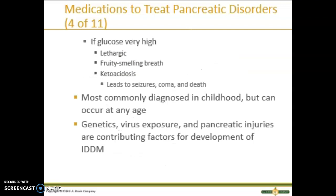If glucose levels remain too high, damage to the eyes, kidneys, heart, and nerves occurs, eventually leading to kidney failure, blindness, heart failure, and death. Signs of very high glucose include lethargy, fruity-smelling breath, and ketoacidosis — the insufficient burning of fat — which can lead to seizures, coma, and death. Insulin-dependent diabetes mellitus (type 1) is most commonly diagnosed in childhood but can occur at any age; genetic factors, virus exposure, and pancreatic injuries are contributing factors.